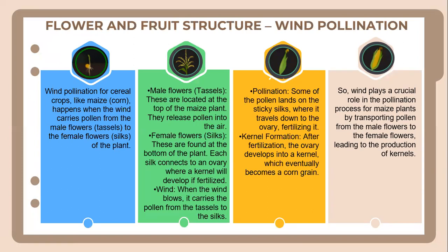Some of the pollen lands on the sticky silks, where it travels down to the ovary, fertilizing it. After fertilization, the ovary develops into a kernel which eventually becomes a corn grain. Wind plays a crucial role in the pollination process for maize plants by transporting pollen from the male flowers to the female flowers, which leads to the production of the kernel.